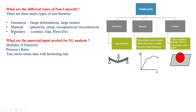The third type is boundary or contact nonlinearity. If you have components like assemblies, we need to consider these contacts, gaps, and fits. When it comes to nonlinear analysis, the material inputs we need are: Young's modulus, Poisson's ratio, and true stress-strain data. Remember there are two types of stress-strain curves — engineering stress-strain and true stress-strain — but for analysis we consider true stress-strain to get accurate results.